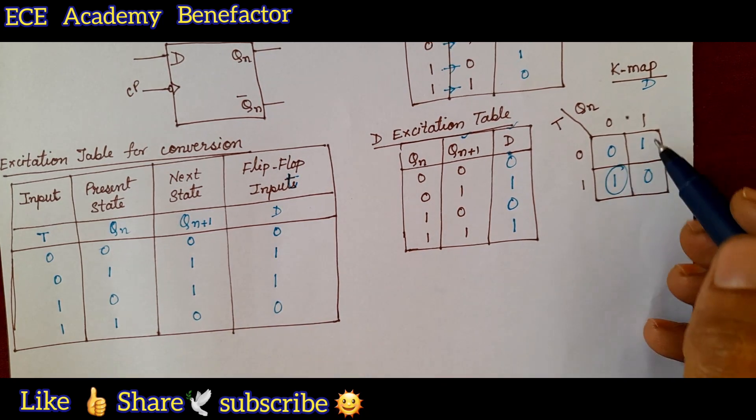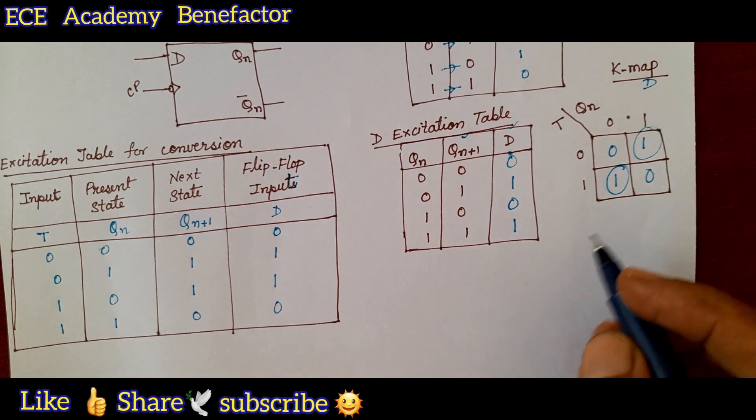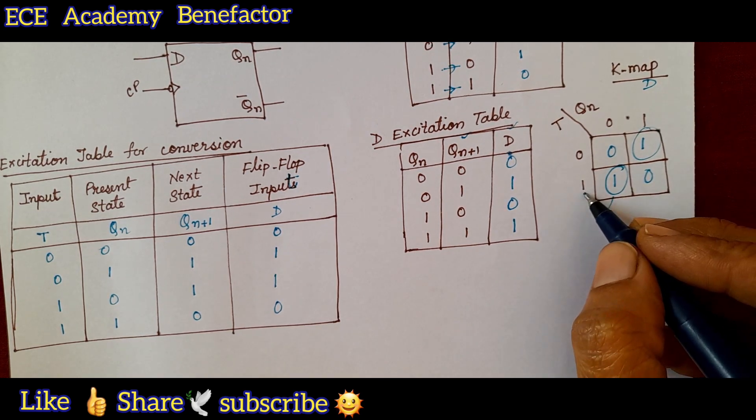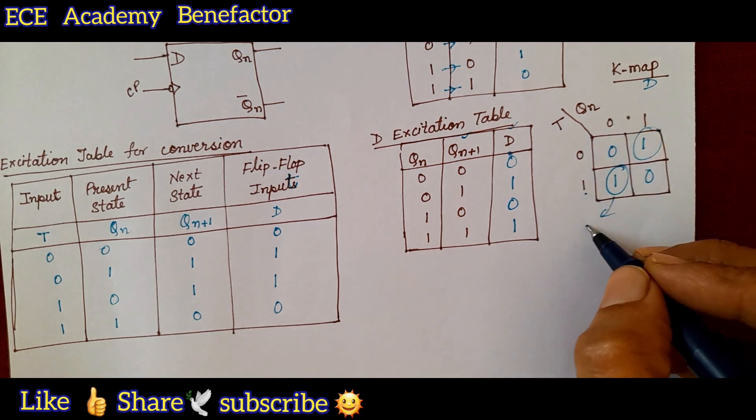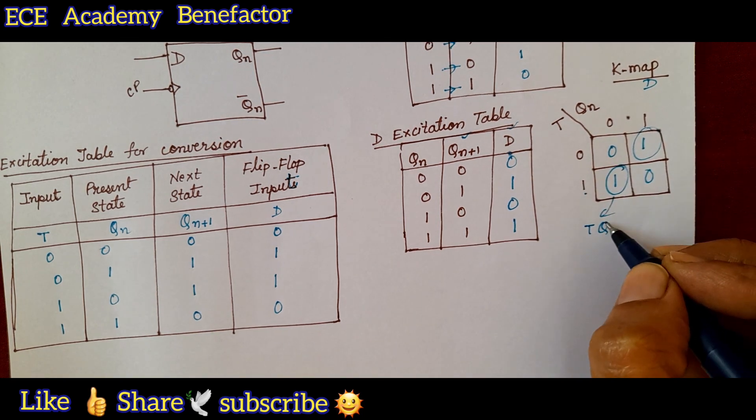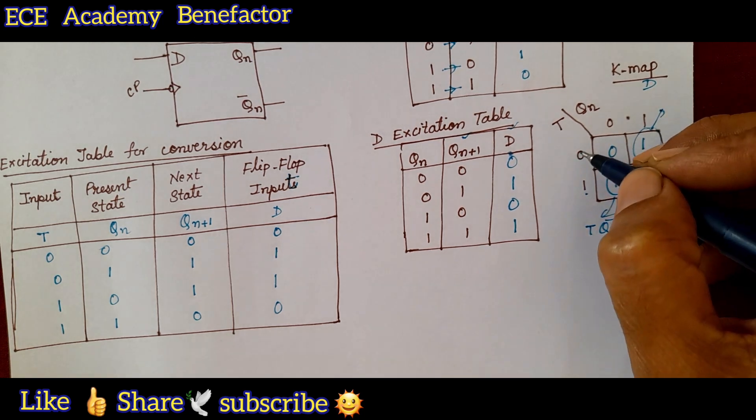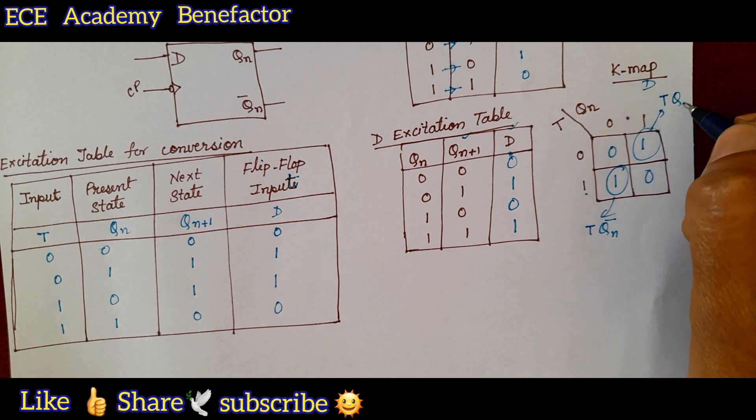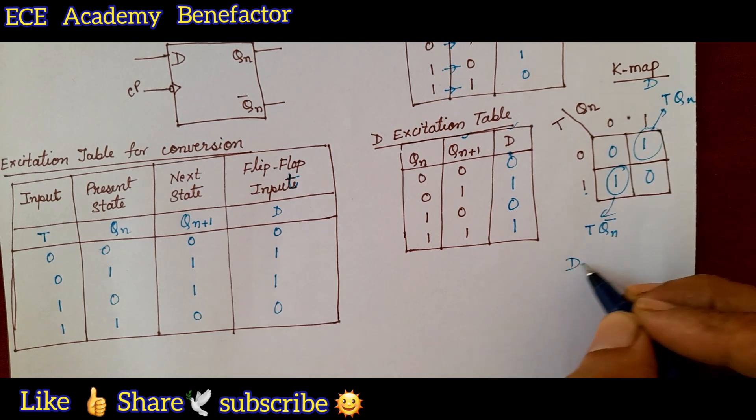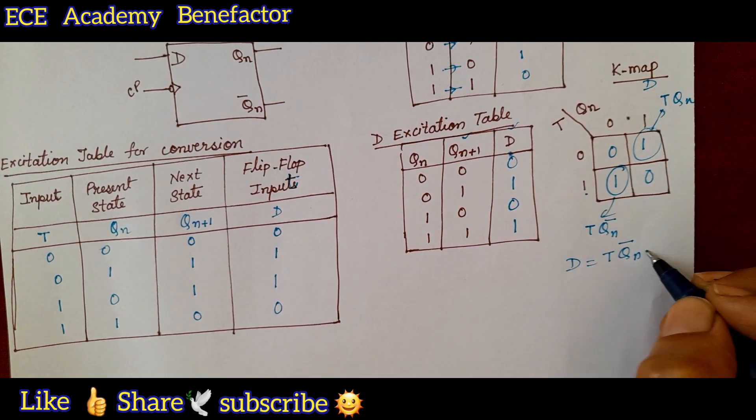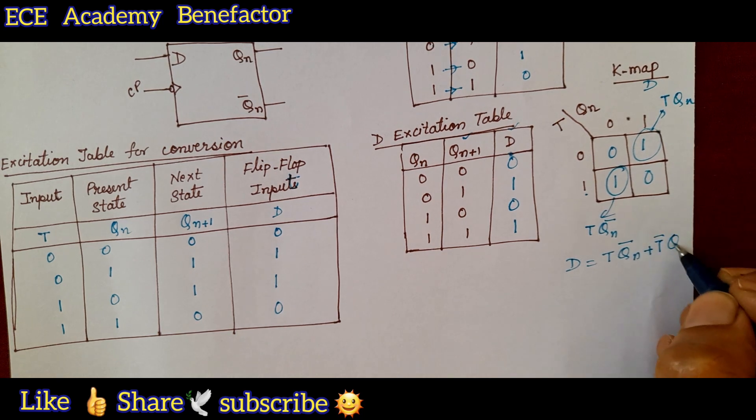And then if you do the pairing it is coming to single groups. For this one it is coming to be as this is T and this is 0, so T Q n bar and this one is T bar Q n.